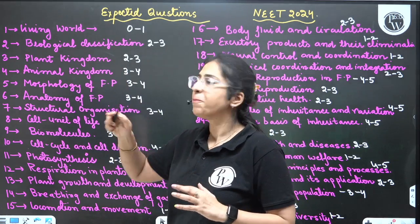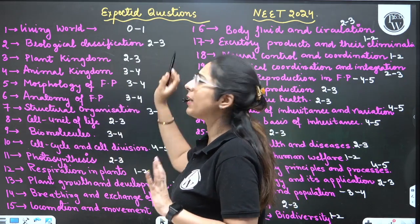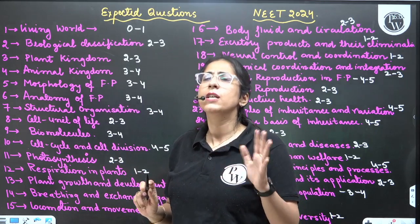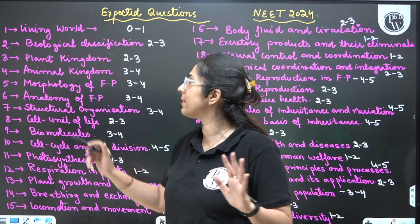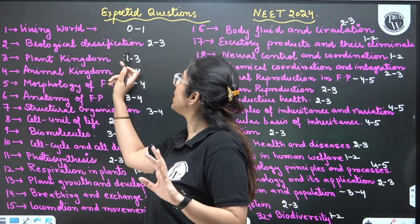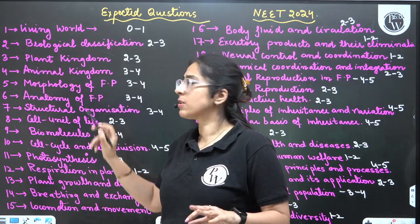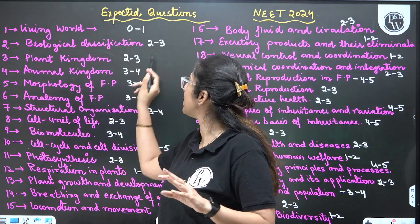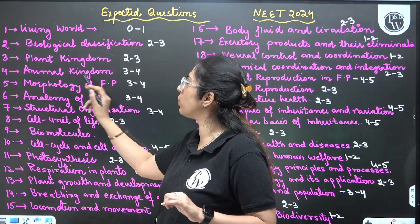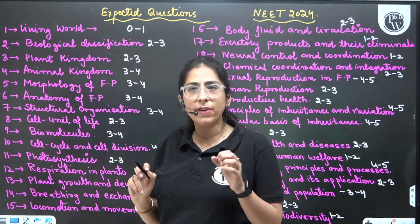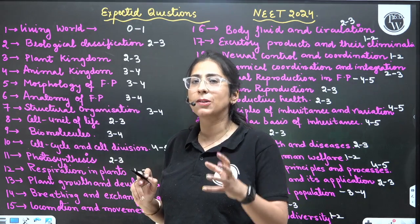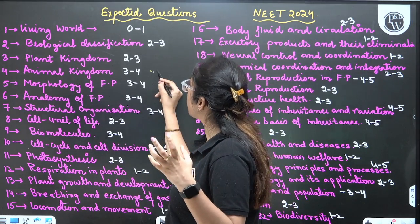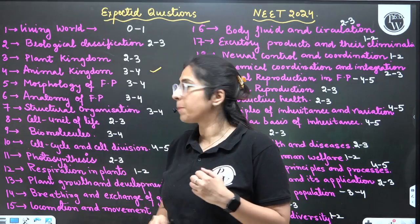From the Living World you can expect zero to one question — the chapter is quite easy. Biological classification: 2 to 3 questions. Plant Kingdom: 2 to 3 questions. Animal Kingdom is a very very important chapter with good weightage — 3 to 4 questions you can directly expect from this chapter.